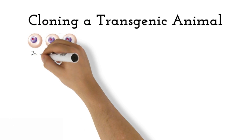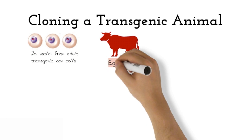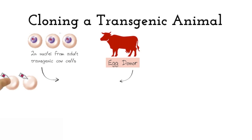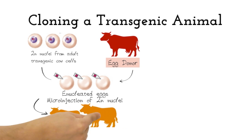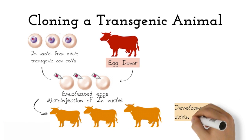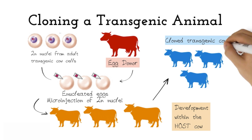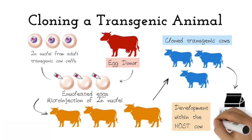To clone a transgenic animal, 2N nuclei from the adult transgenic cow cells are microinjected into enucleated eggs provided from the egg donor. These new eggs will then be developed in the host cow to eventually become cloned transgenic cows, which should also express the gene that was expressed in the original transgenic cow.